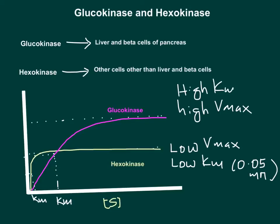The Km value for glucokinase is 5 millimolar, meaning glucokinase has 100 times higher Km than hexokinase. Km is the substrate concentration at which the enzyme reaches half of its maximum velocity. Lower Km means the enzyme has higher affinity toward the substrate; higher Km means lower affinity.